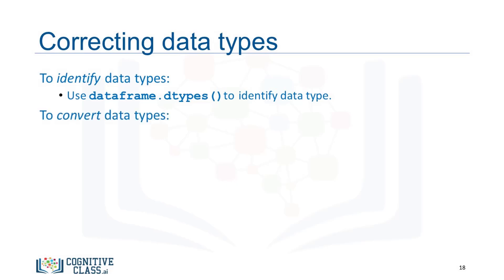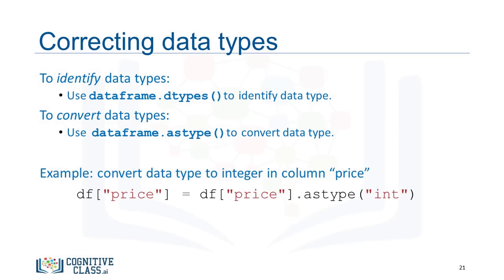In the case of wrong data types, the method dataFrame.astype can be used to convert a data type from one format to another. For example, using astype int for the price column, you can convert the object column into an integer type variable.